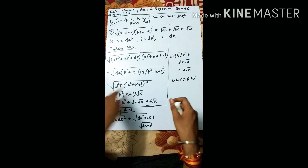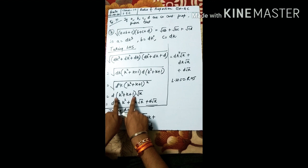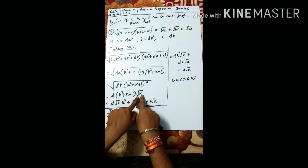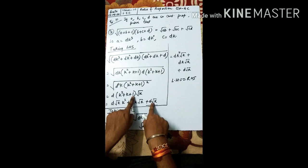So d · d gives d², times k(k² + k + 1) times (k² + k + 1), which gives a whole square. Taking the square root: d² comes out as d, and under root k is left. Multiplying out gives d√k · (k² + 1) as the final LHS, with d·√k inside the bracket.